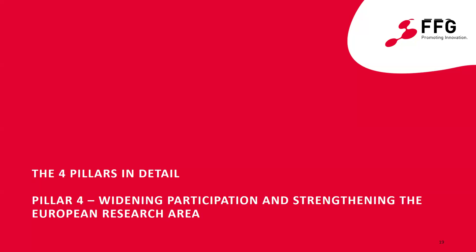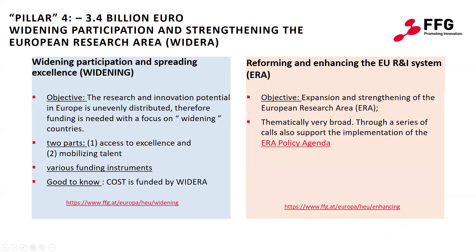Finally, a brief insight into the last cross-cutting area, also called Pillar 4: Widening Participation and Strengthening the European Research Area. This part of the program has a budget of 3.4 billion euros and is often abbreviated as WIDERA. On the one hand, this involves targeted funding lines for countries that have so far been less active or successful in research and innovation — the so-called widening countries. On the other hand, it involves reforming and strengthening the European Research Area, or ERA for short, meaning further expanding and consolidating ERA.